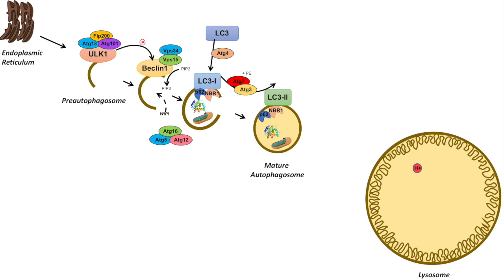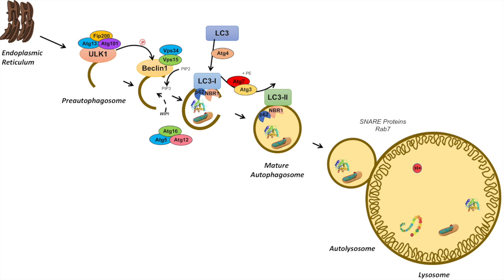This is when we call it a mature autophagosome. Once you have a mature autophagosome with its contents, it will actually fuse to the lysosome via SNARE proteins and RAB7. Once it fuses to the lysosome it becomes an autolysosome. The membranes fuse together, the autophagosome releases its contents into the lysosome, and those substrates are degraded in the acidic lysosome by proteases such as cathepsin B and L, among other cathepsins.